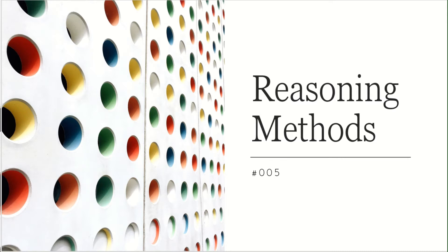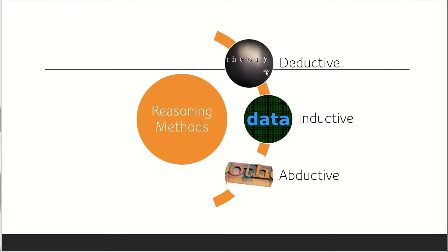There are three reasoning methods you can see on the screen: number one is deductive, number two is inductive, and number three is abductive. Mostly scientists in the lab use deductive and inductive — these are vice versa to each other. Deductive is based on a simple idea and theory, while inductive is based on data; abductive provides a simple explanation.